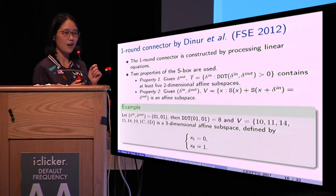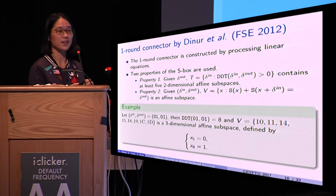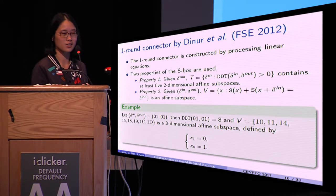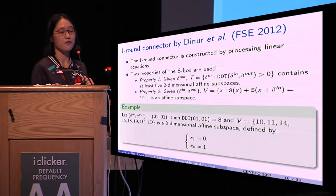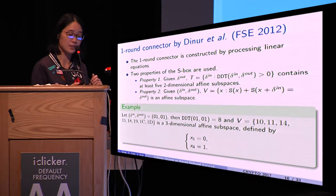Property one: given the output difference, the set of possible input differences contains at least five two-dimensional affine subspaces.